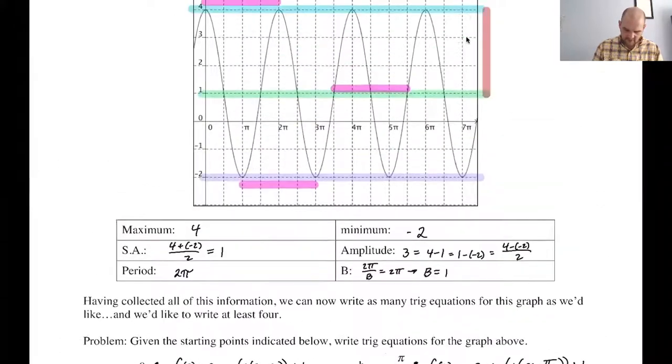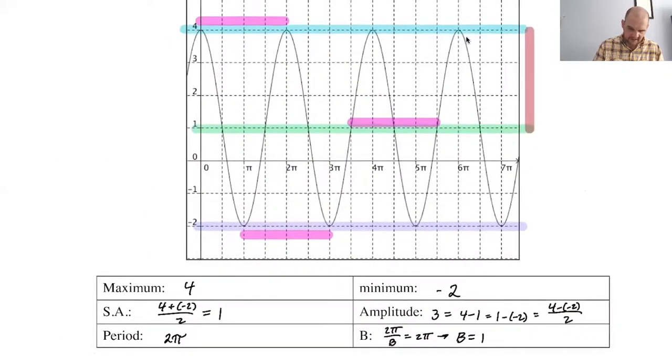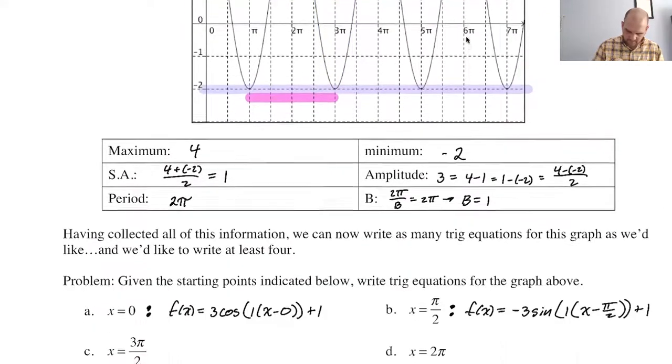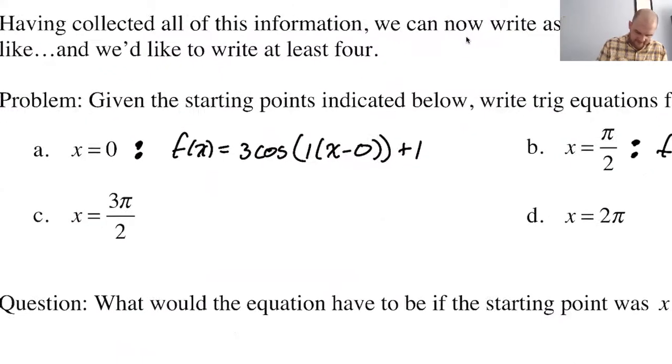What if we start at three pi over two? So why are we skipping pi? I don't really know. So pi would have been here. So three pi over two is here. So we're starting at an intercept going up to a maximum. What is this? That looks like a sine graph to me. So it's positive sine. So f of x is going to be positive sine. So three sine. B never changes. X minus the starting point. And then the sinusoidal axis never changed.